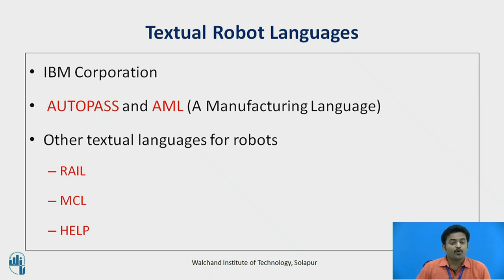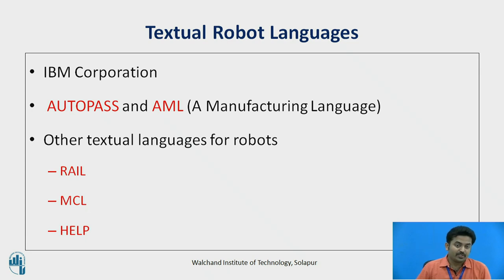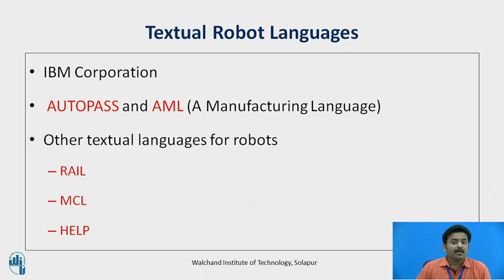Both of these languages are directed at assembly and related tasks. Other textual languages include RAIL, introduced in 1981 by Automatix for robotic assembly and arc welding as well as machine vision. MCL — Manufacturing Control Language — was developed under US Air Force sponsorship by McDonnell Douglas as an enhancement of APT (Automatically Programmed Tooling), and HELP, available from General Electric under license from the Italian firm DEA.